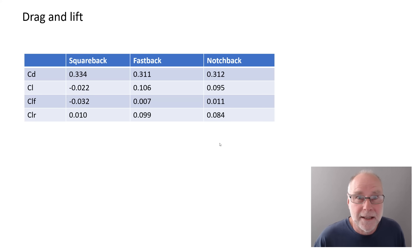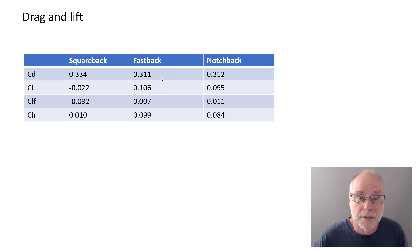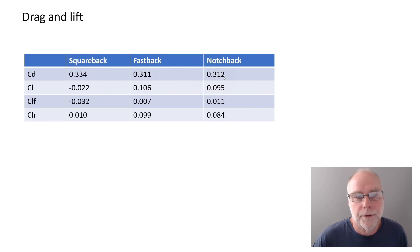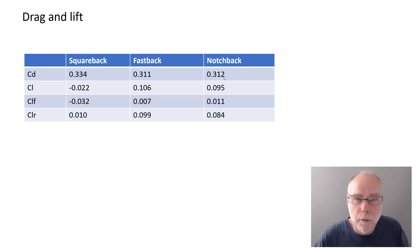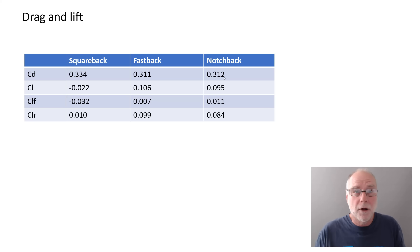Let's cut to the chase — what did they find out? Looking at drag values, coefficient of drag CD: the squareback model is 0.334. The fastback is significantly lower in drag at 0.311. And the notchback is very close to the fastback, just a little bit more drag at 0.312. These match largely what we already know, but it's so fantastic to see it done with almost identical models with just the rears changing, all in one wind tunnel, with one pressure measurement. I've never actually seen that done before with that degree of intellectual rigor.